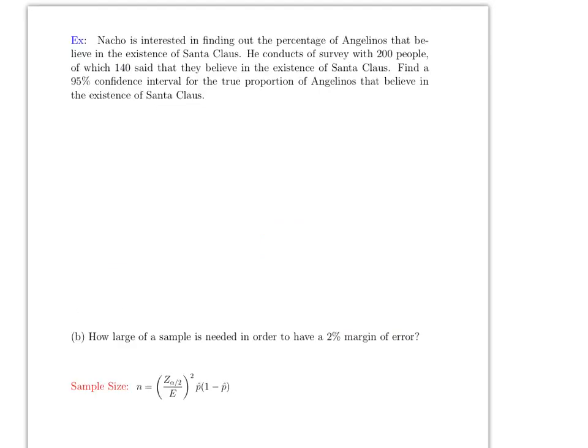Let's do a word problem now. The question says Nacho is interested in finding out the percentage, so that's how you know it's about the proportion of Angelinos that believe in Santa. So he asked 200 people, of which 140 say that they believe in Santa. And the question is asking you to find a 95 percent, so 95 means that alpha is 0.05. Before the problem, the first thing you need to figure out is how much is p hat. Remember, the approximation to p, so this will be 140 divided by 200, which is 0.7. So that would be p hat.